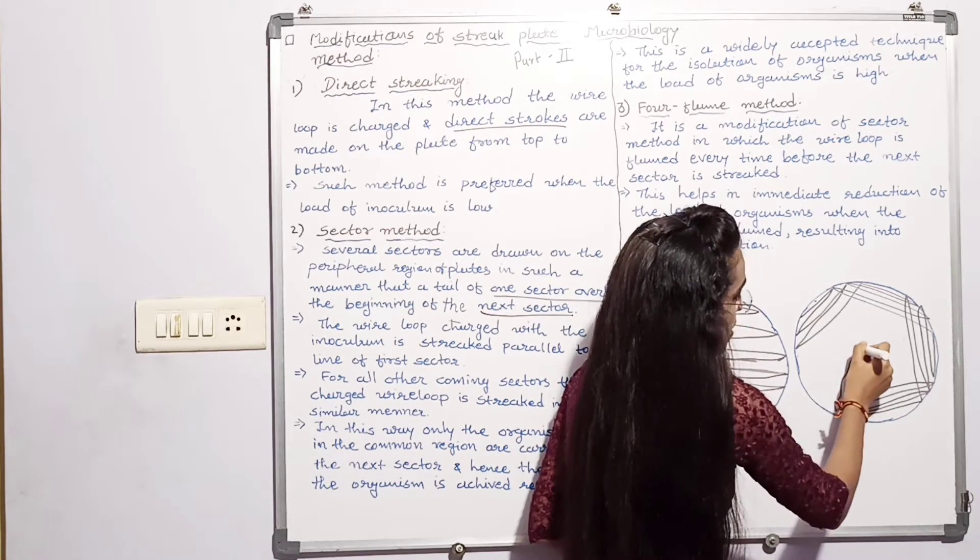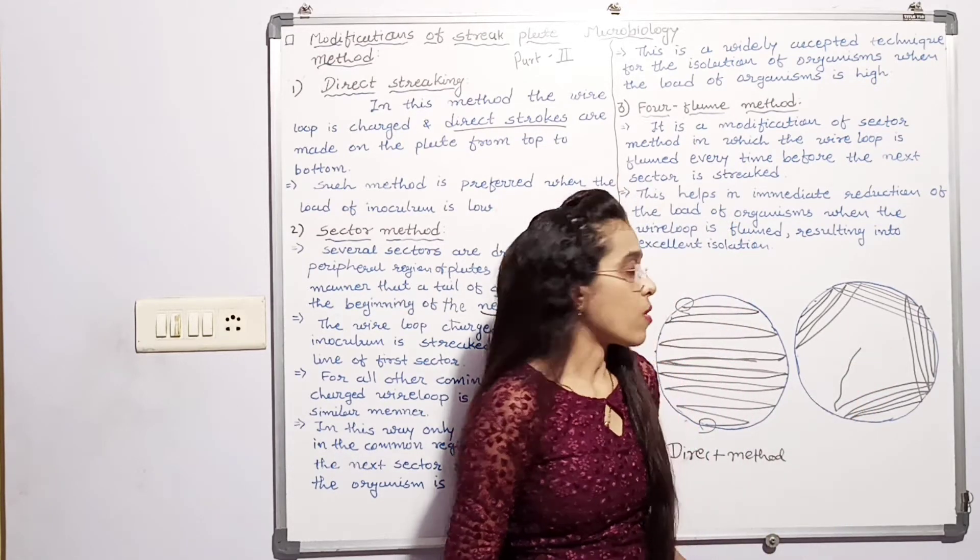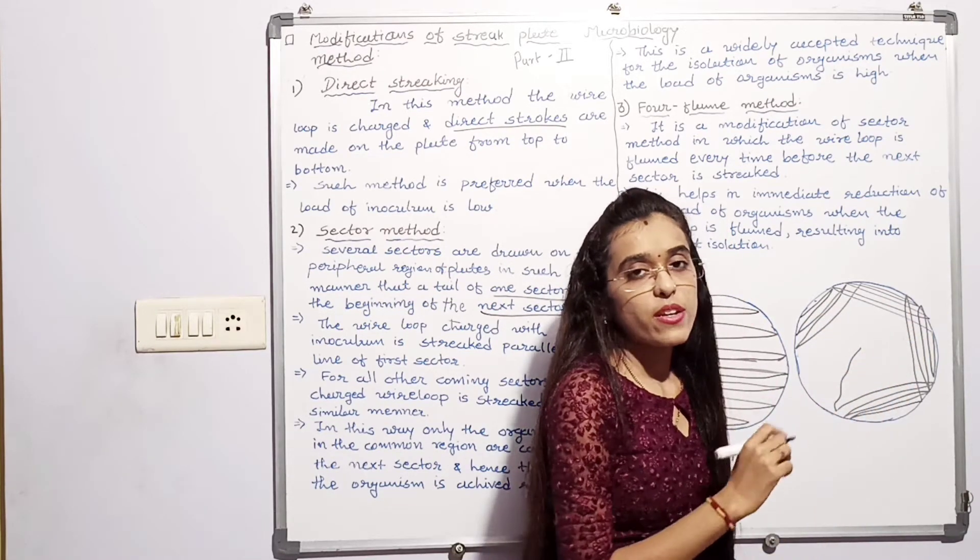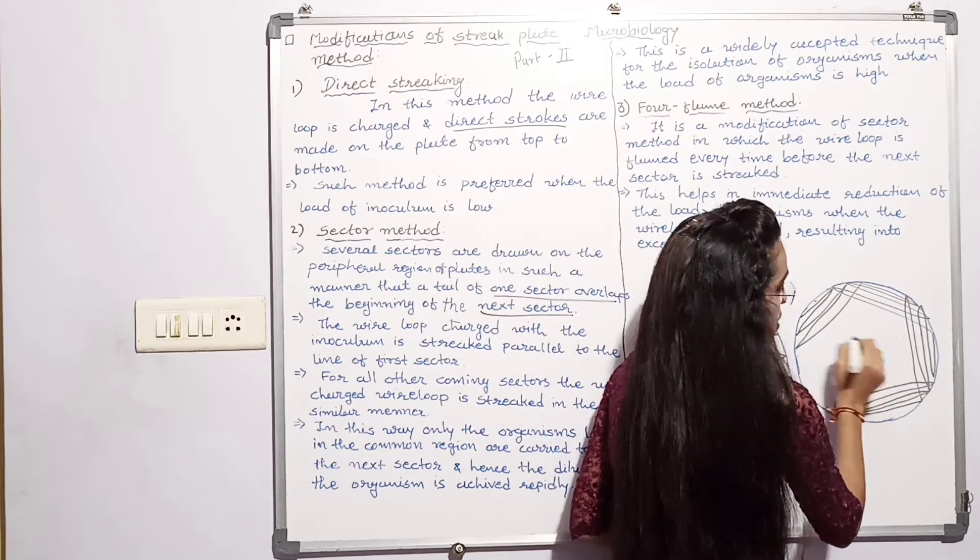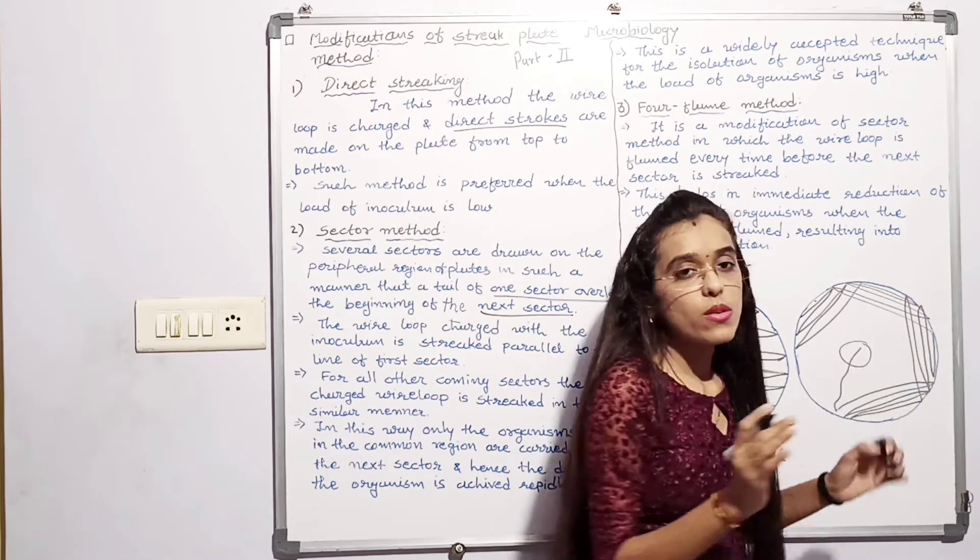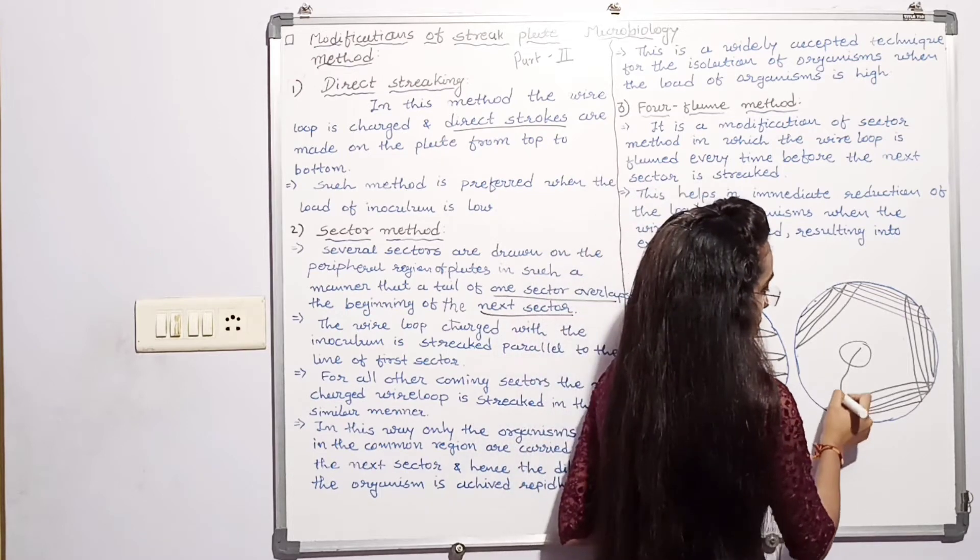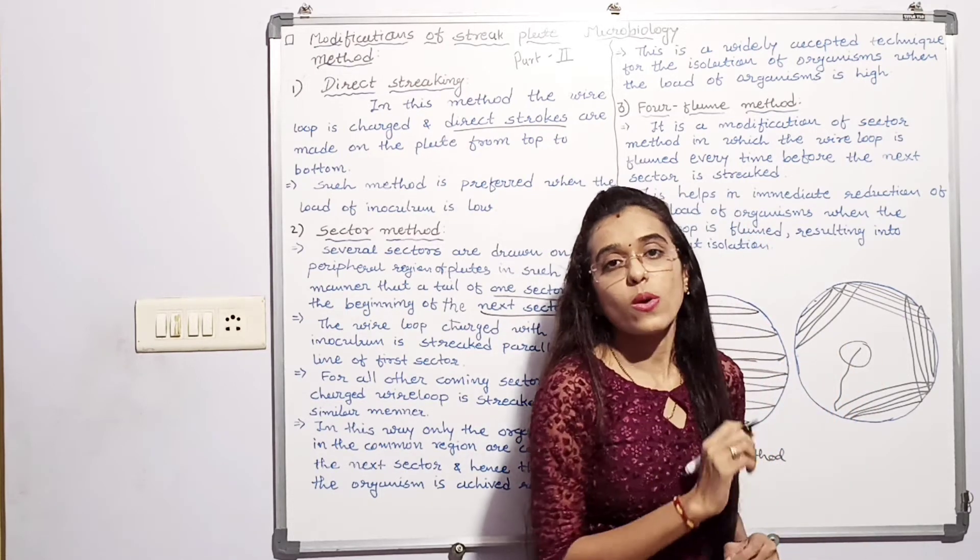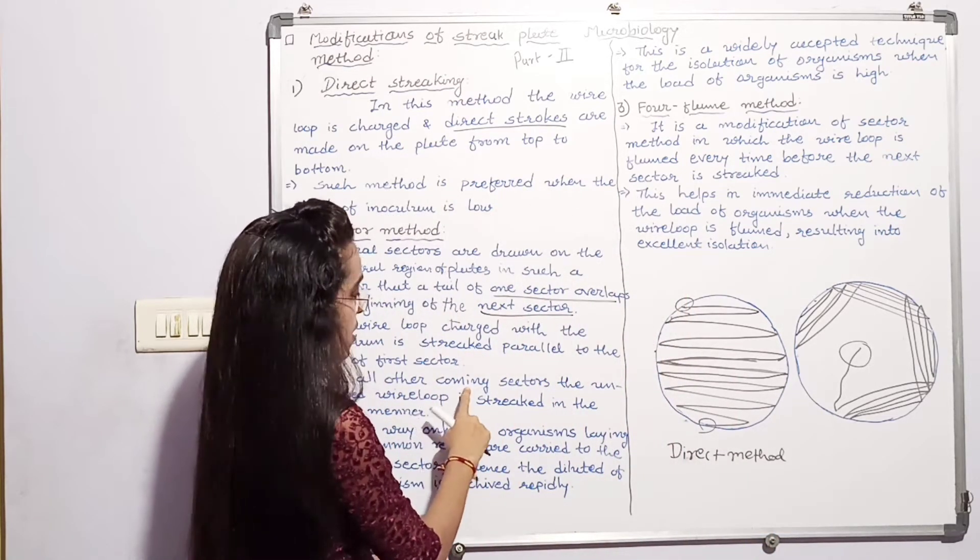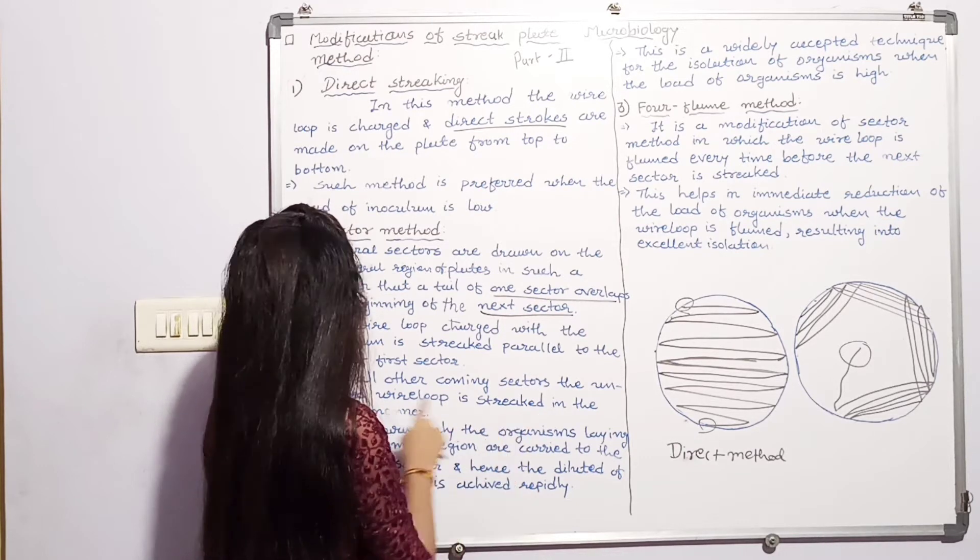At the end of this start another sector. So one sector is overlap to another sector. And the end of this sector, streak like this. For all the other community sectors, the charged wire loop is strict in a similar manner.